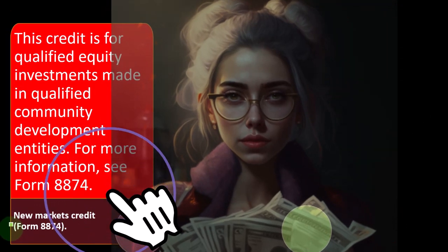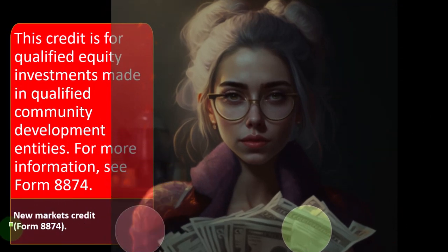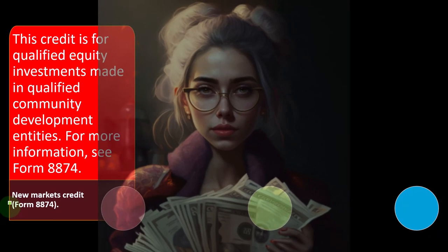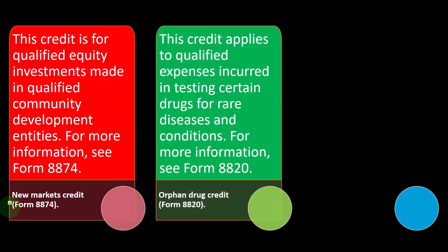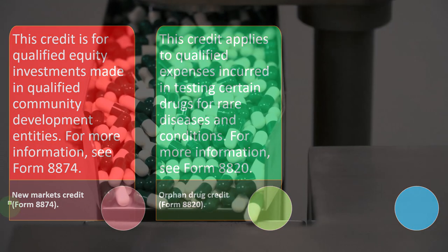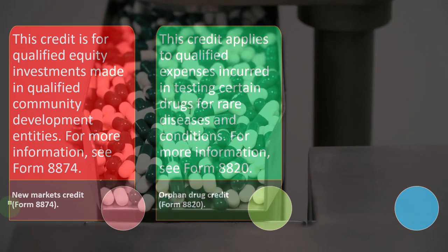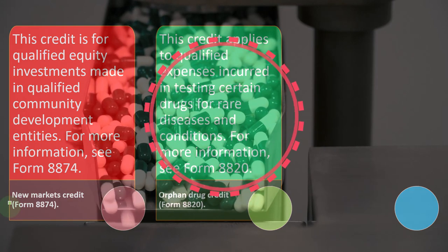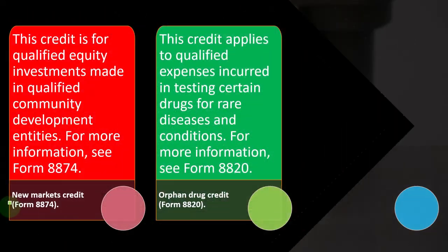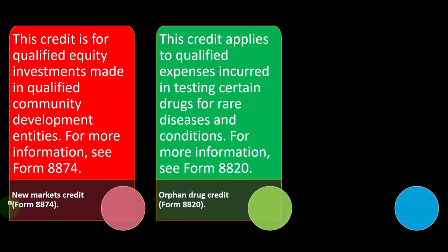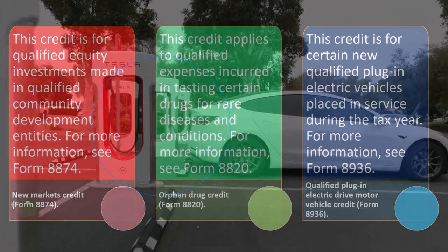The New Markets Credit is on Form 8874. This credit is for qualified equity investments made in qualified community development entities. The Orphan Drug Credit is on Form 8820. This credit applies to qualified expenses incurred in testing certain drugs for rare diseases and conditions — a fairly specific credit.